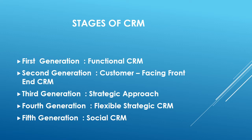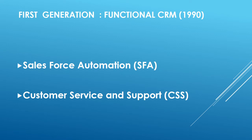Having revised what CRM is, we now look at the stages of CRM — how one evolved into another. There are five stages to date, as seen on the screen. We will now discuss each one of them. The first generation is the functional CRM stage.